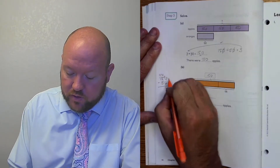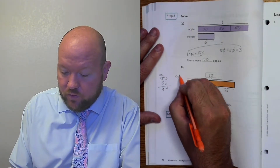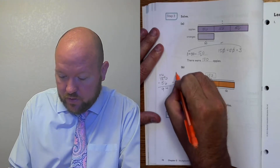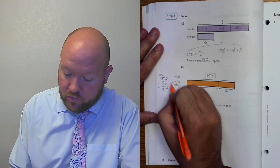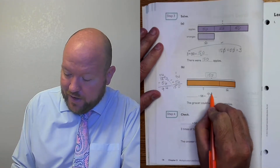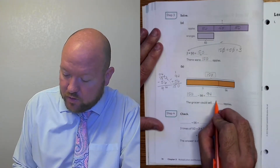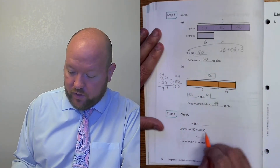Zero minus five, I have to regroup. This becomes a four, this becomes a ten. Ten minus six is four. Four minus five, I need to regroup. This becomes a zero, this becomes a fourteen. Fourteen minus five is nine. Let's check that: 94 plus 56. Four plus six is ten. One and nine make ten, plus five is fifteen. So 150 — that checks out. So there are 94. So 150 minus 56 equals 94. The grocer could sell 94. We already did the checks here and here.